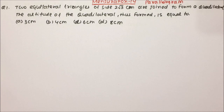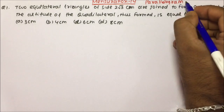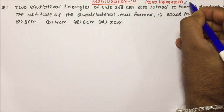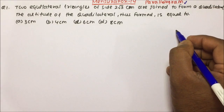You can expect five questions from mensuration in SSC and railway. Now starting with question number one, which is based on the parallelogram concept. Before solving this question, please watch the previous video on parallelogram where I have discussed the basics. A parallelogram is a quadrilateral with opposite sides equal.